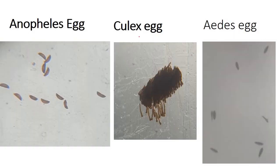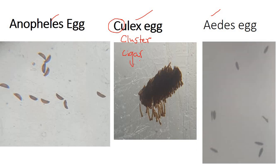The first and easiest spotter is the egg. We have to differentiate between Anopheles, Culex, and Aedes. The mnemonic here is 'C' for Culex: Culex lays in clusters, and individually the eggs are cigar-shaped. When the egg is in a cluster, you can easily identify it as a Culex egg. When the egg is laid singly, it may be either Anopheles or Aedes. Spindle-shaped eggs are Anopheles.